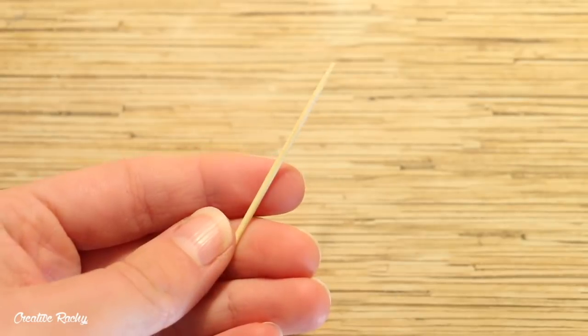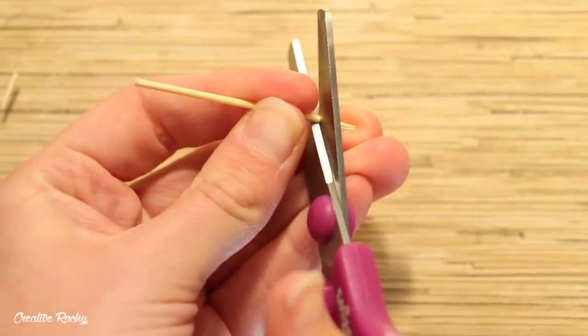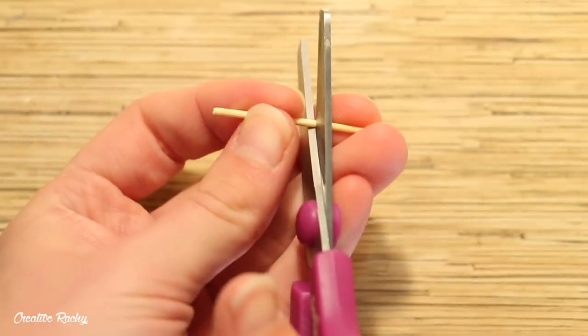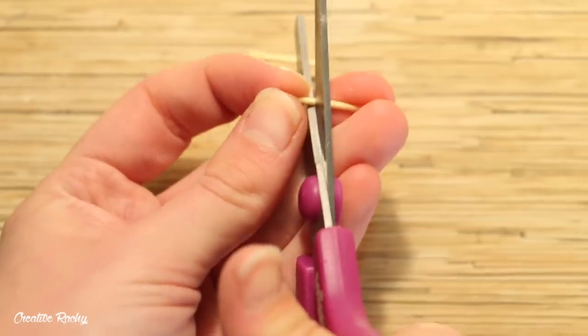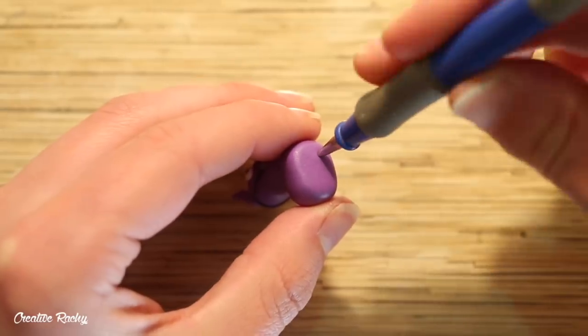For the legs of the llama I decided to use toothpicks which I will paint later on rather than using clay which could risk breaking. So I cut up one of my toothpicks into four sections and then I created four indents in the body of the llama where I wanted to position the legs.